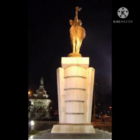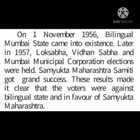Later, a Hutatma Smarak was erected in Mumbai near Flora Fountain in memory of the people who sacrificed their lives for the formation of Sanyukta Maharashtra. On 1st November 1956, the bilingual Mumbai State came into existence, but the people of Mumbai were against it — they wanted to be part of Maharashtra. In 1957, Lok Sabha, Vidhan Sabha, and Mumbai Municipal Corporation elections were held, and the results made it clear that voters were against the bilingual state and in favour of Sanyukta Maharashtra.